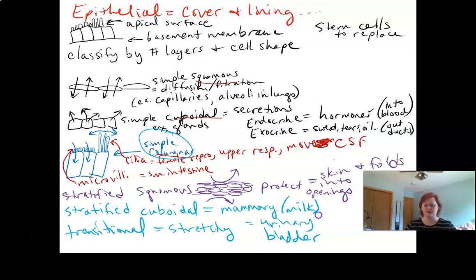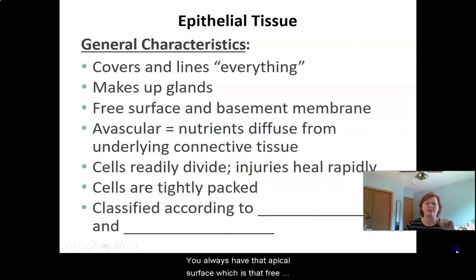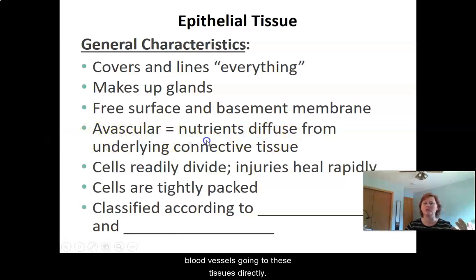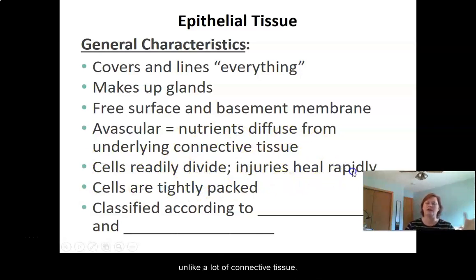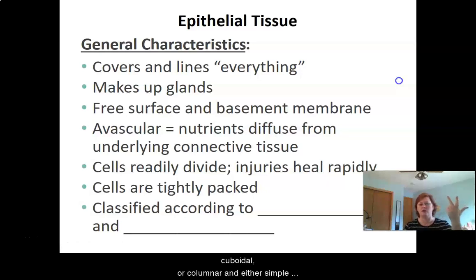Let's take a look at a couple of slides. Remember, epithelial tissue covers and lines everything and makes up your glands. You always have that apical surface — the free surface — and a basement membrane anchoring it. Epithelial tissue tends to be avascular, meaning without blood vessels going directly to these tissues, so nutrients must diffuse from underlying tissues. Because of abrasion, rapid cell division means injuries heal quickly in epithelial tissue, unlike connective tissue. We classify it by cell shape — squamous, cuboidal, or columnar — and by layers: simple (single layer) or stratified (multiple layers).